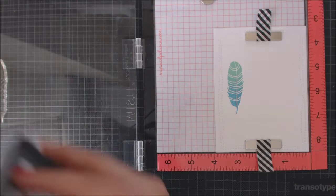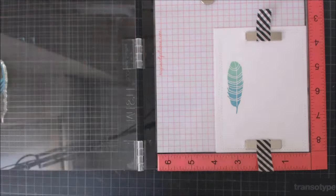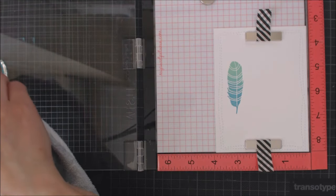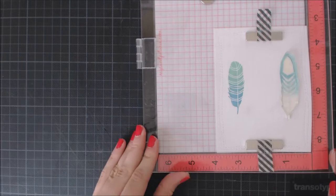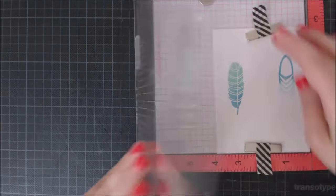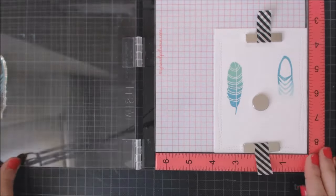So for the feather on the right side I'm combining Broken China with Wilted Violet following the same process as for my first one and I'm gonna be using Spice Marmalade and Worn Lipstick inks for the biggest one in the middle.